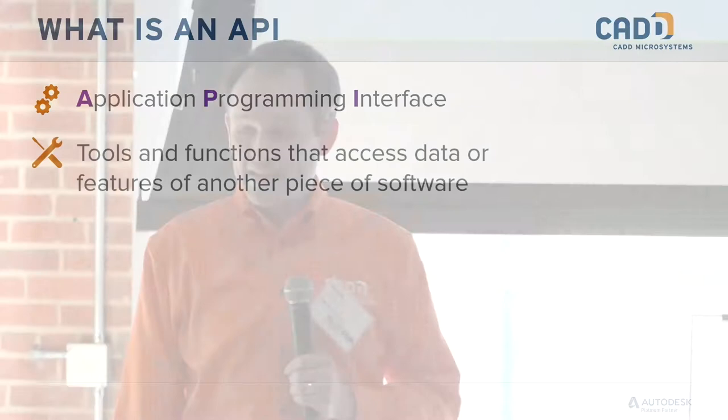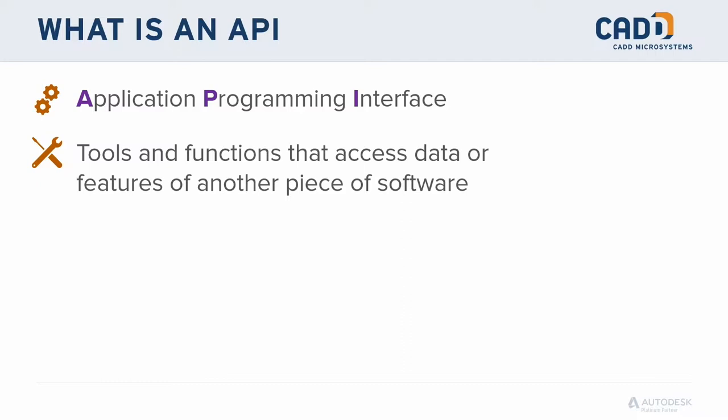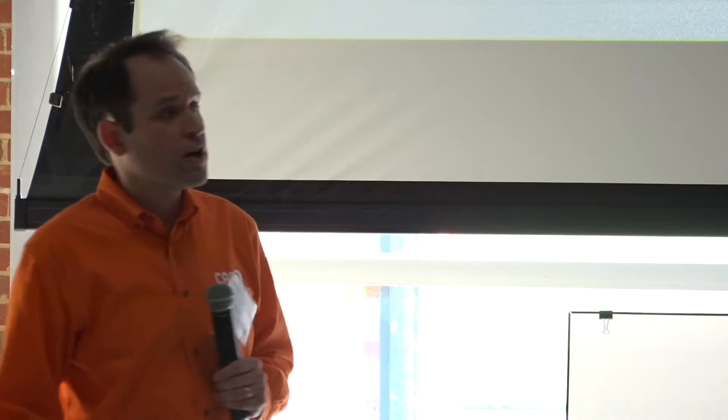From 30,000 feet: what is an API? API stands for Application Programming Interface. It is the tools and functions behind the scenes that let you access software and make it do what you want. It can also be the middleman between two pieces of software. When you use Word or Revit with your mouse, you're going through the UI. The API is essentially a backdoor into the software — not through mouse clicks but through calls, rules, and methods exposed through the API.